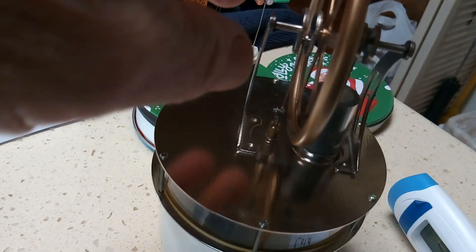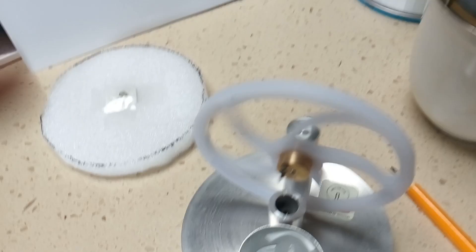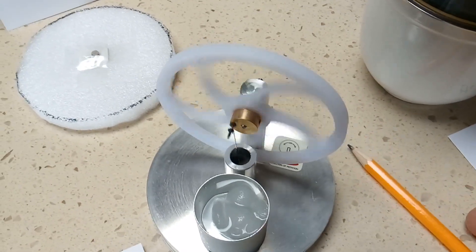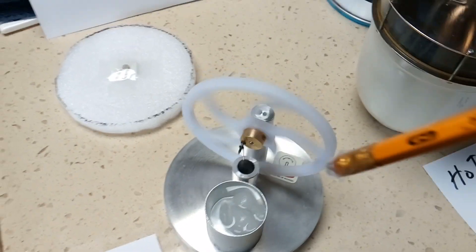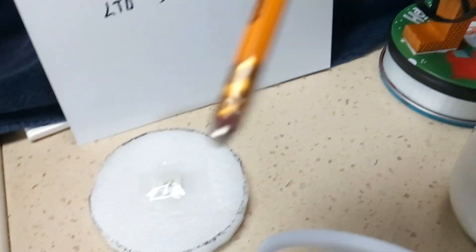How this works - it doesn't use a linkage to pull the displacer up and down like this or that one there. It uses a magnetic coupling. It's real simple. It just has the cylinder that goes up and the piston goes up and down there.